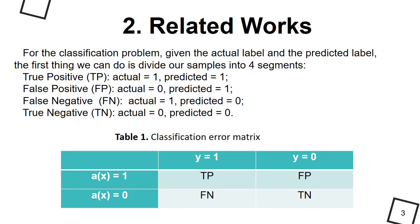According to classical theory, several indicators are used to evaluate the quality of such classification algorithms. Consider them in more detail. For the classification problem, given the actual label and the predicted label, the first thing we can do is divide our samples into 4 segments: true positive,